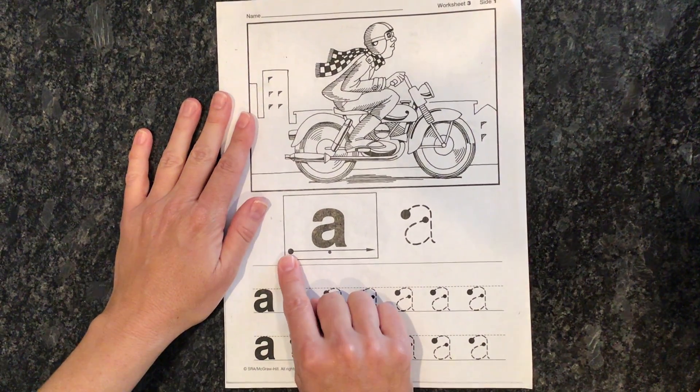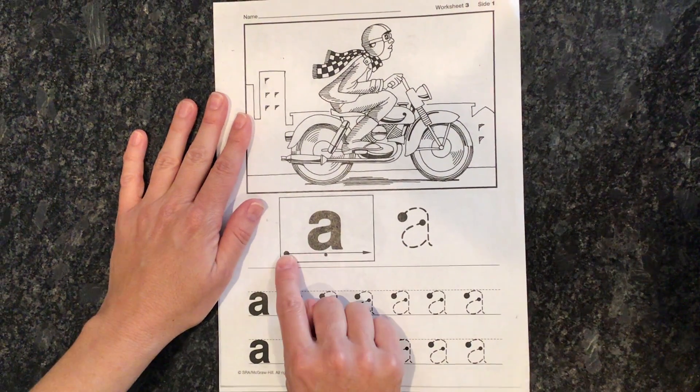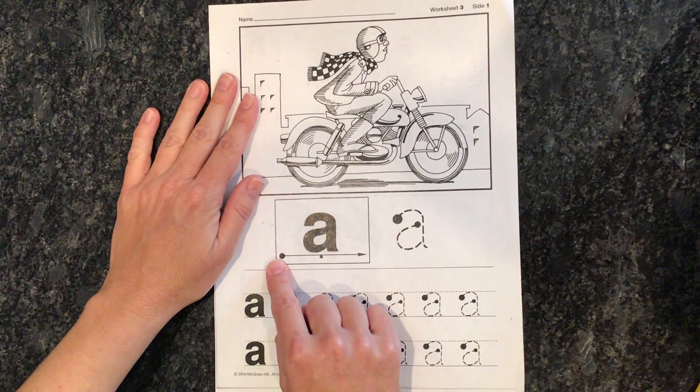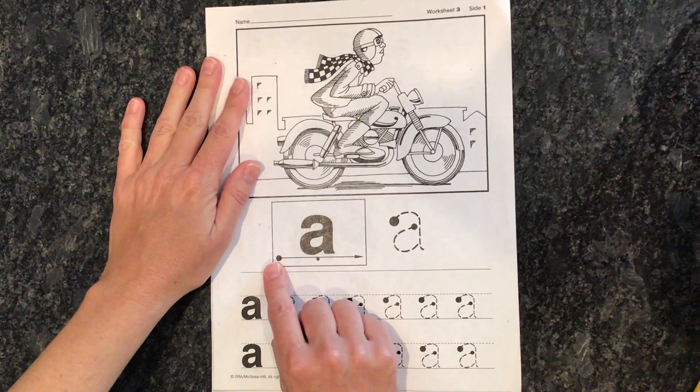All right, now we're going to say it the fast way. So listen to me. Remember, finger comes over, say it, and then it pops right back. Don't hold it there. Listen to me. Ah. Let's do it together. Ah. By yourself. Good job saying ah.